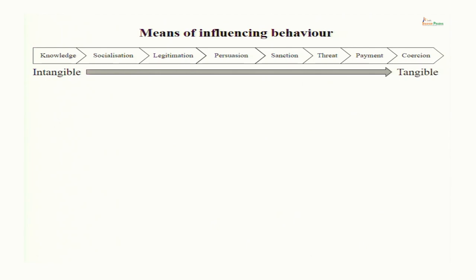The most tangible form of influencing behavior is coercion — when you forcefully make someone do something. Then the next one is if you pay someone to do something. And then there are methods a bit more subtle than that: either you threaten someone to use force instead of directly using force, or you restrict the ability to receive payments. These methods of influencing behavior are known as hard power — basically economic and coercive methods.